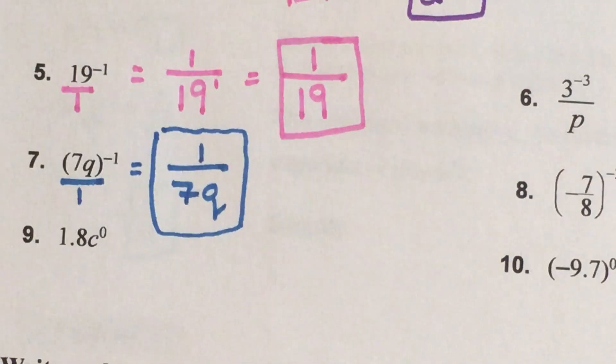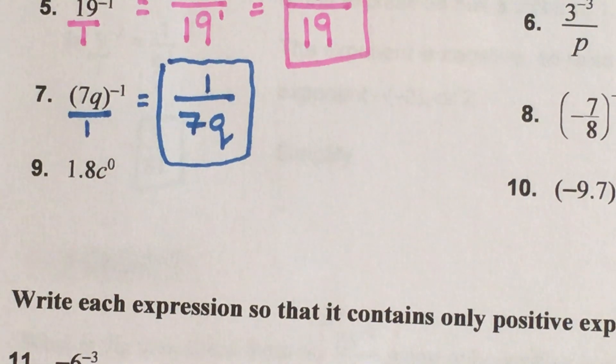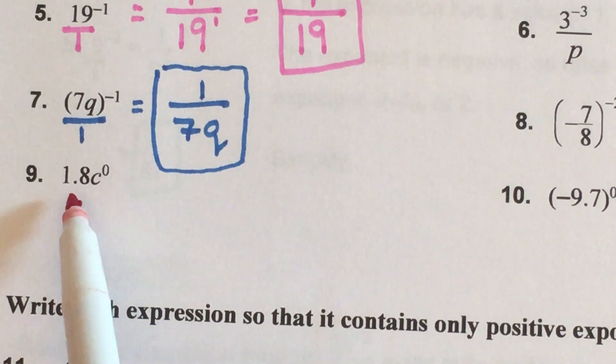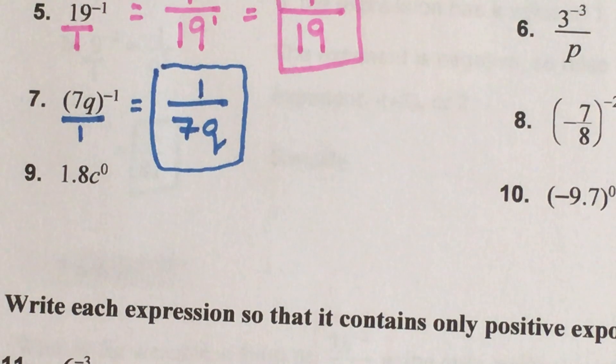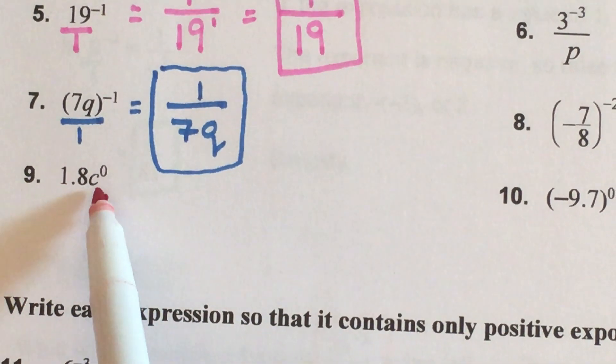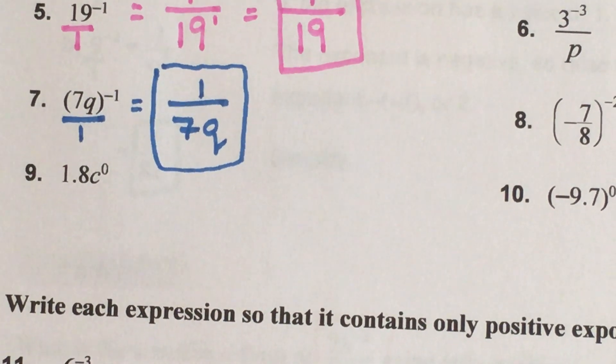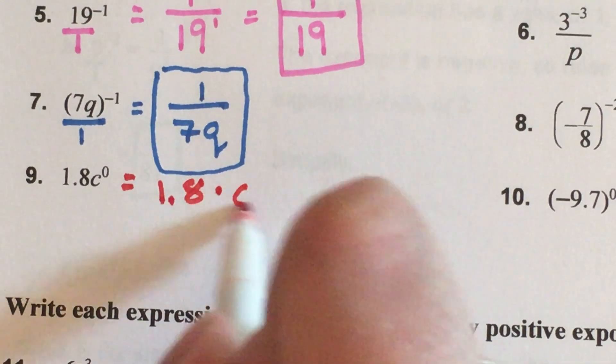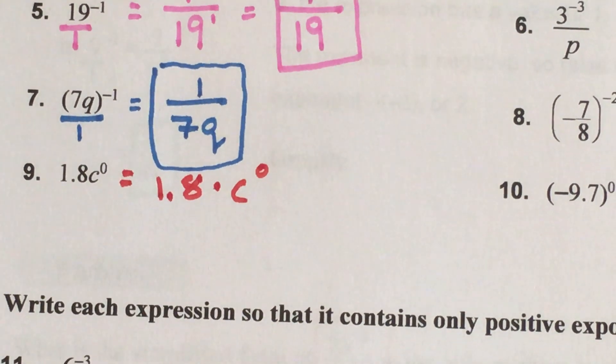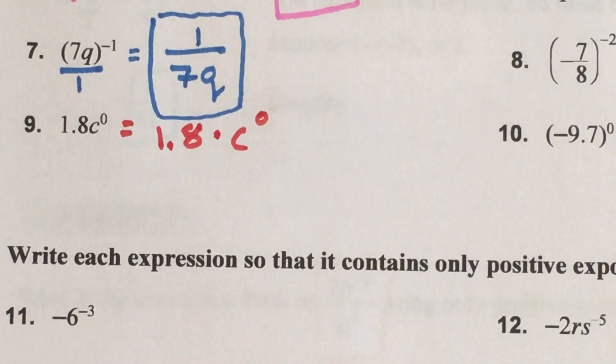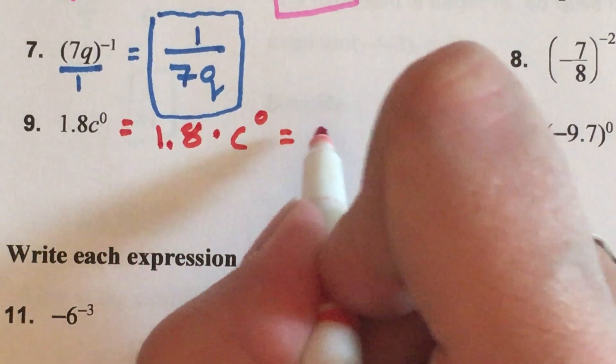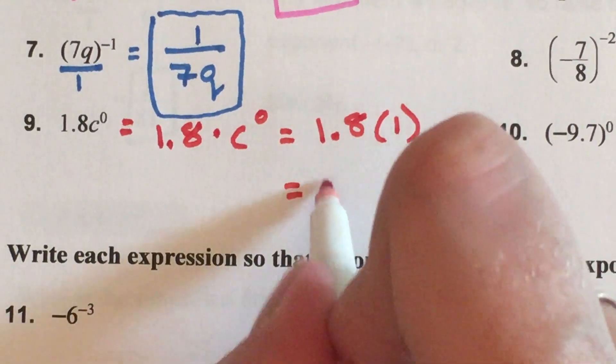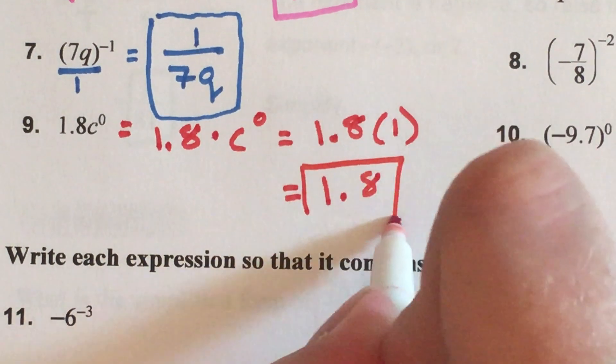Let's check out number nine. In problem nine, do we have any parentheses? No. So which part has the exponent of a zero? The 1.8, the c, or both of them? Good job, it's just the c. So really this is 1.8 times c to the zero power. What did we say about anything to the zero power? That's right, it's equal to one. So this is 1.8 times one which equals 1.8, and that's your final answer.